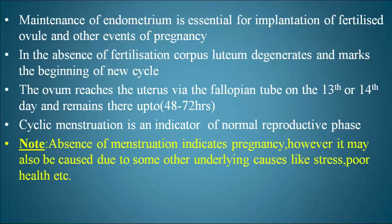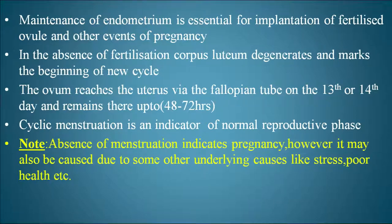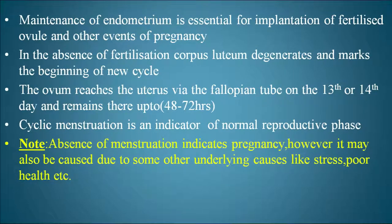The ovum reaches the uterus via the fallopian tube on the 13th or 14th day, where it remains for 48 to 72 hours. That is why the mid-cycle is also called the fertile period. The days from 10 to 17 of the menstrual cycle are called the fertile period. Cyclic menstruation is an indicator of a normal reproductive phase; absence of menstruation indicates pregnancy, but may also be caused by stress, poor health, anemia, etc.